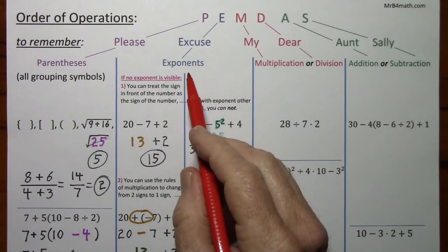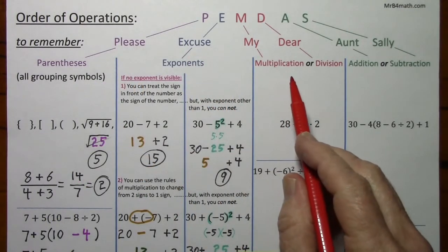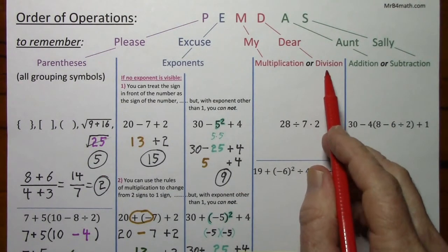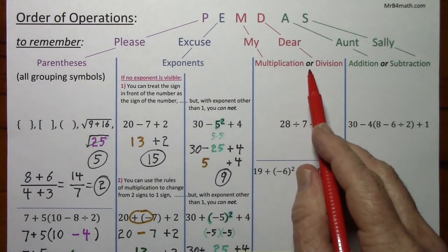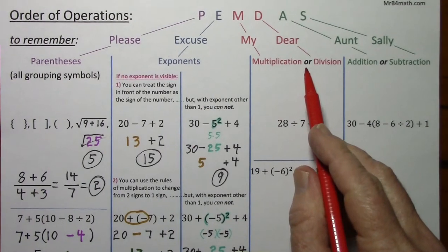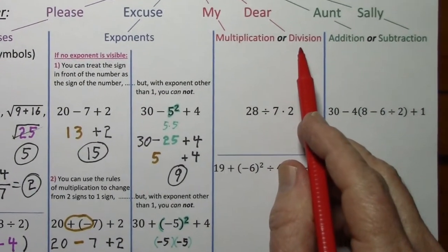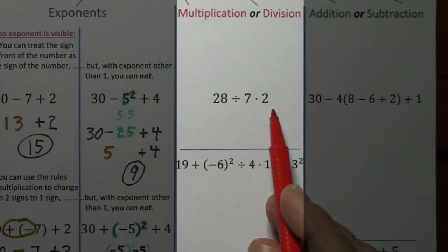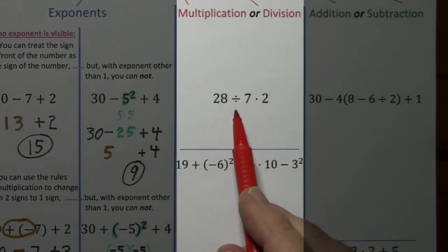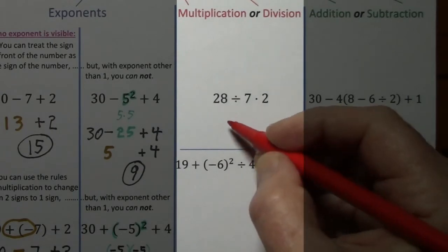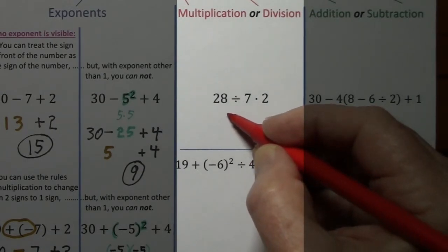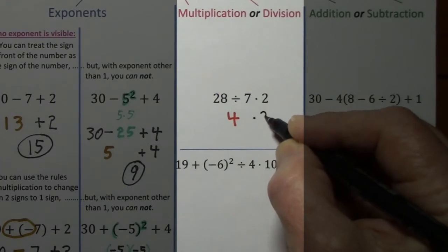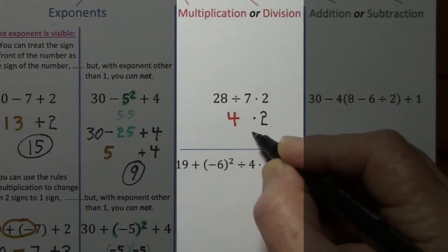After exponents, our next concern is multiplication or division — whichever one we get to first going left to right; that's why we use the word 'or.' Proceeding left to right, we have division: 28 divided by 7 gives us 4. Bring down the times 2, and this gives us 8.